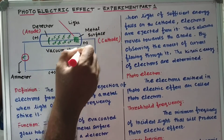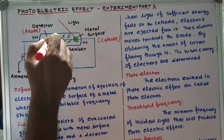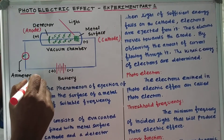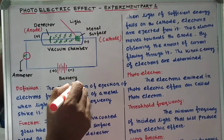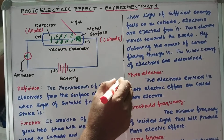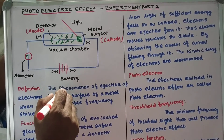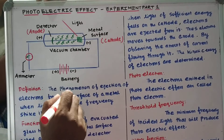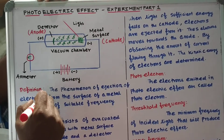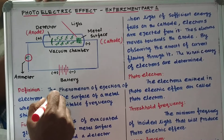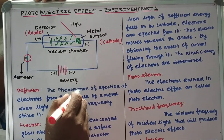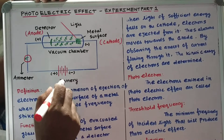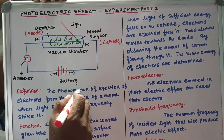This is the experimental setup given as a diagram. First of all, we are going to see the definition. The photoelectric effect is the phenomenon of ejection of electrons from the surface of a metal when light of suitable frequency strikes it.